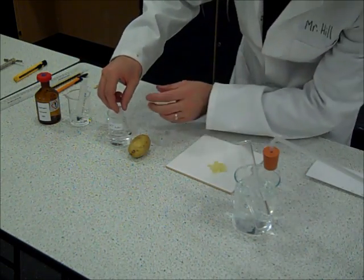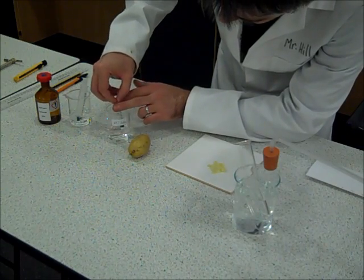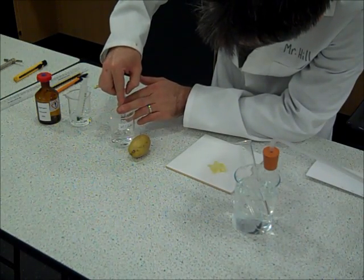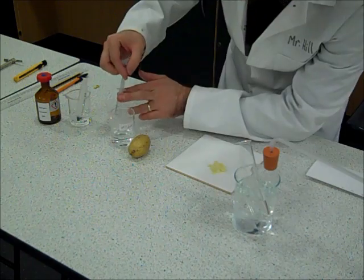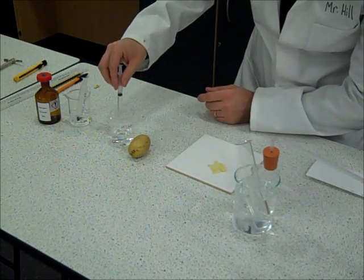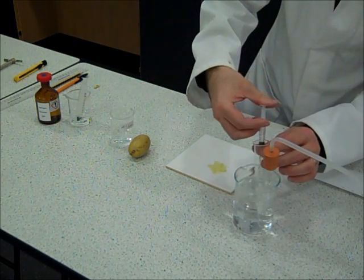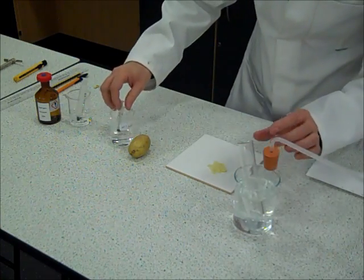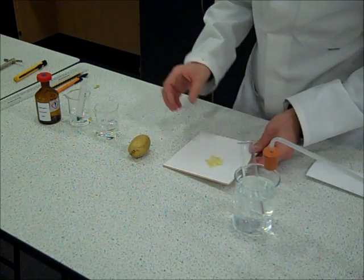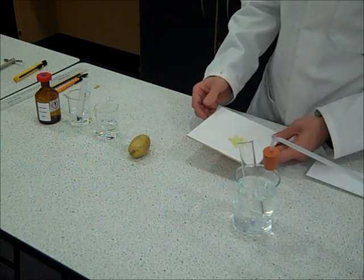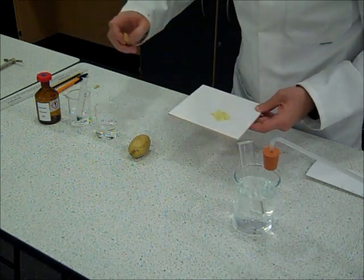I'm also going to add a pH buffer. I'm going to put 2 millilitres of that in as well to maintain the same pH throughout the reaction. And finally I'm going to put my 25 potato discs that contain catalase into the tube.